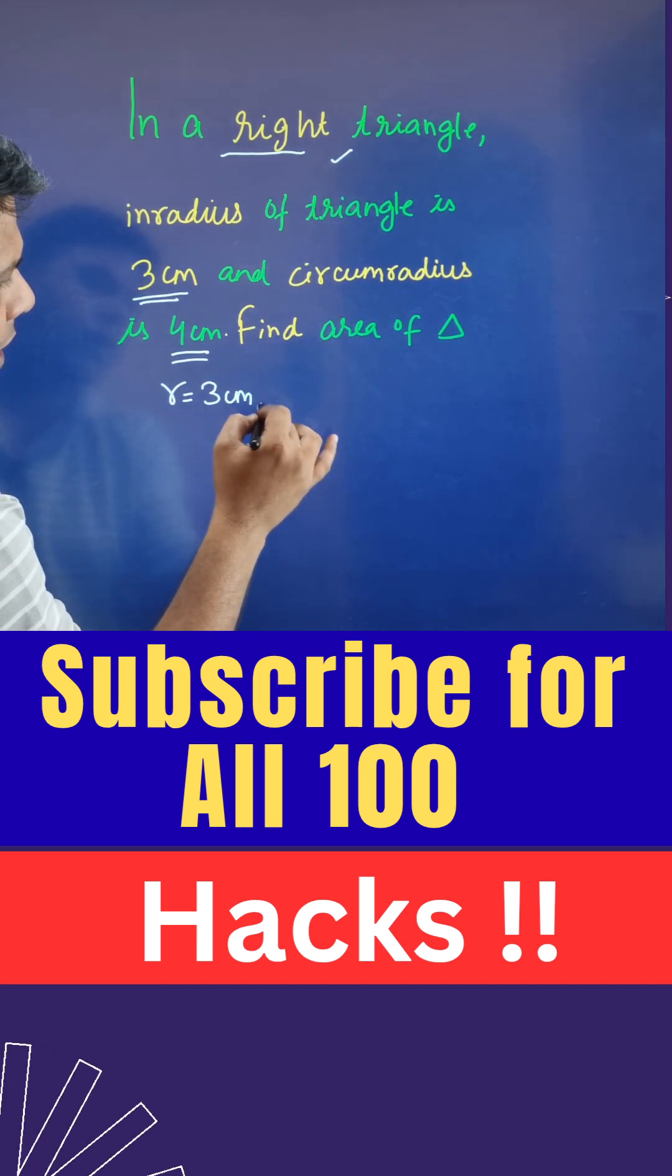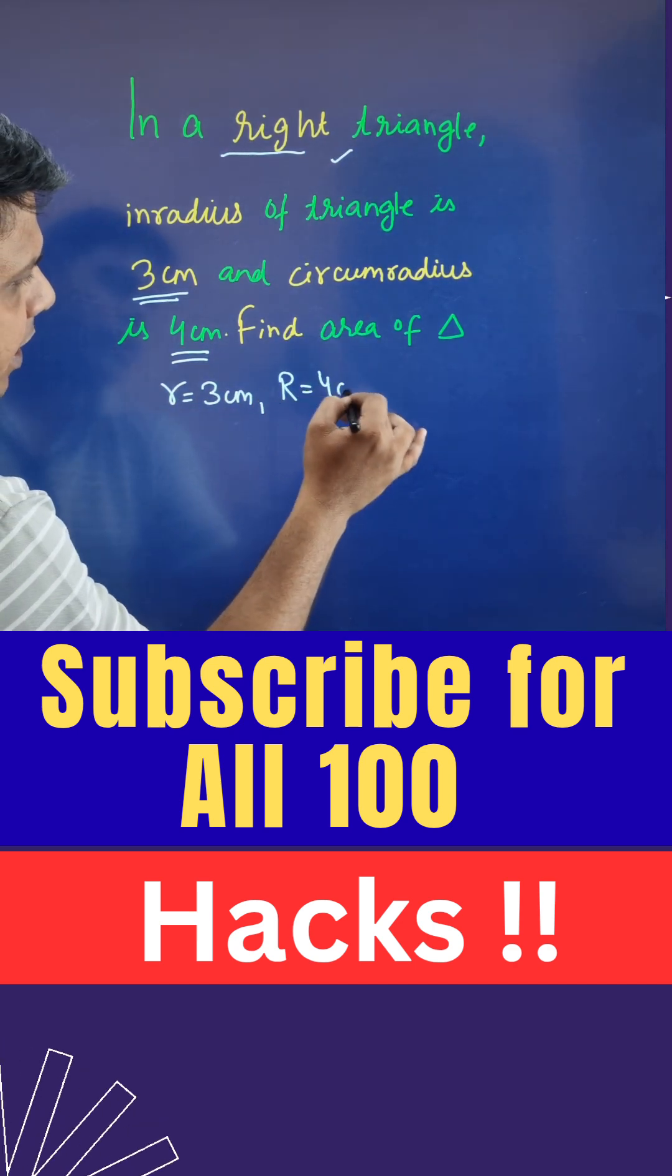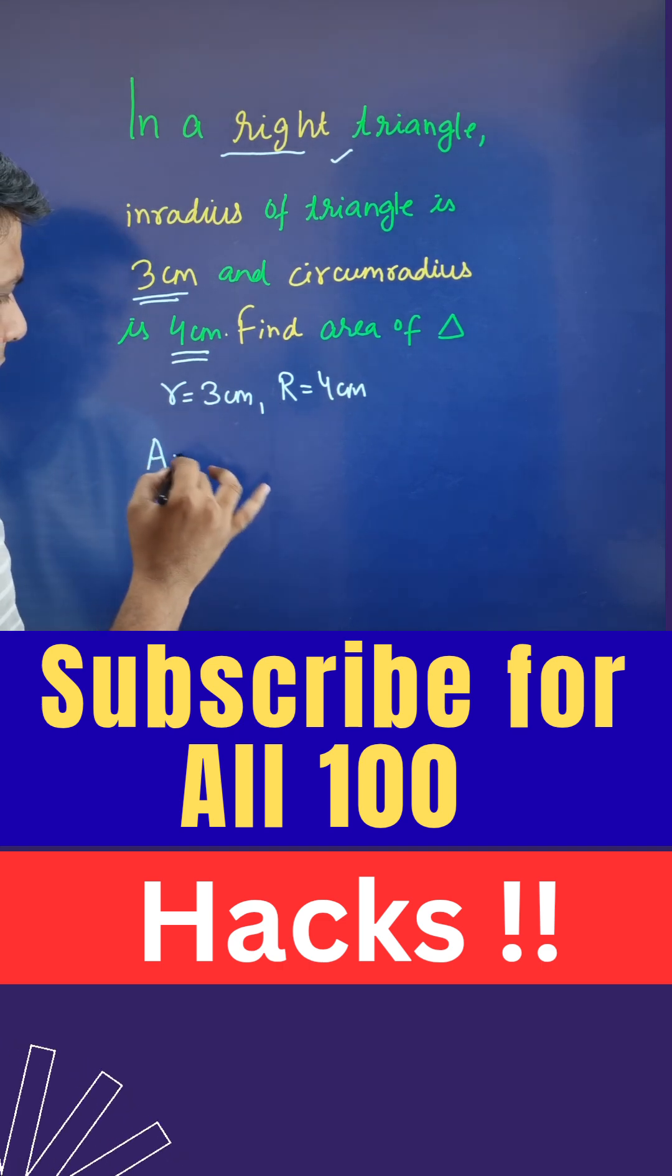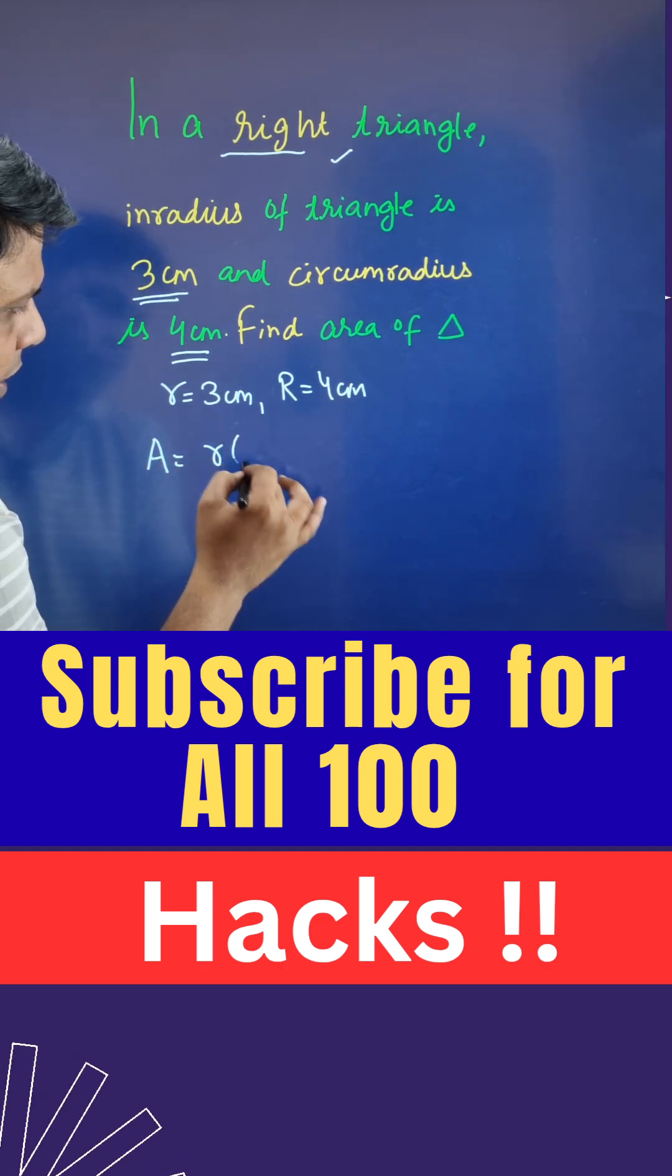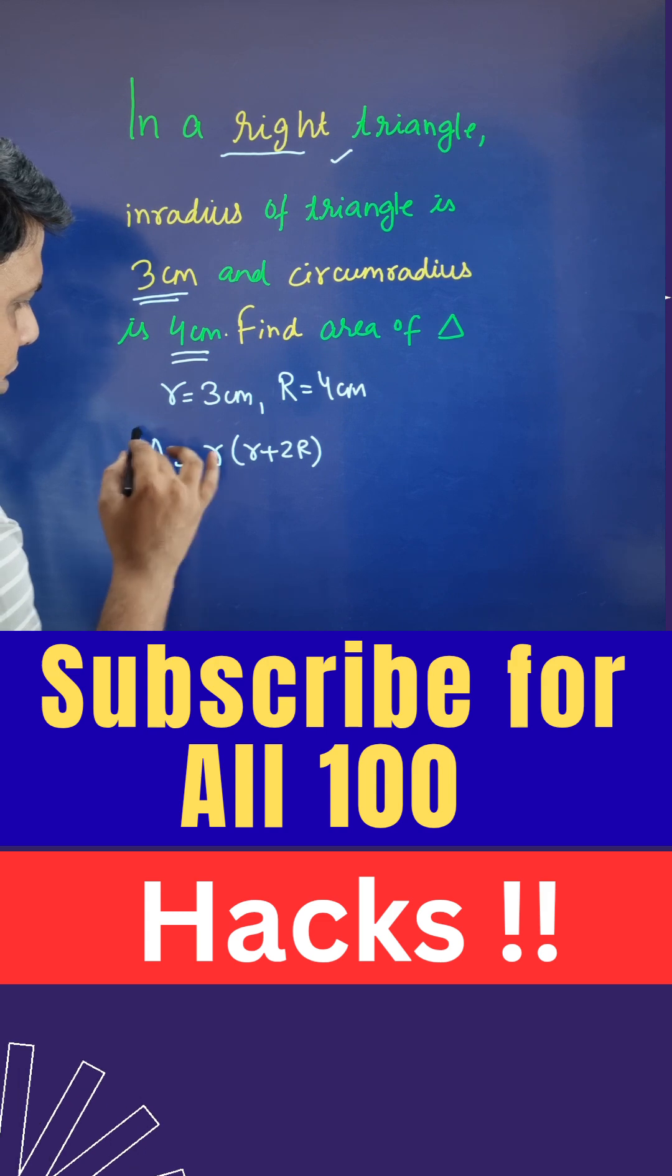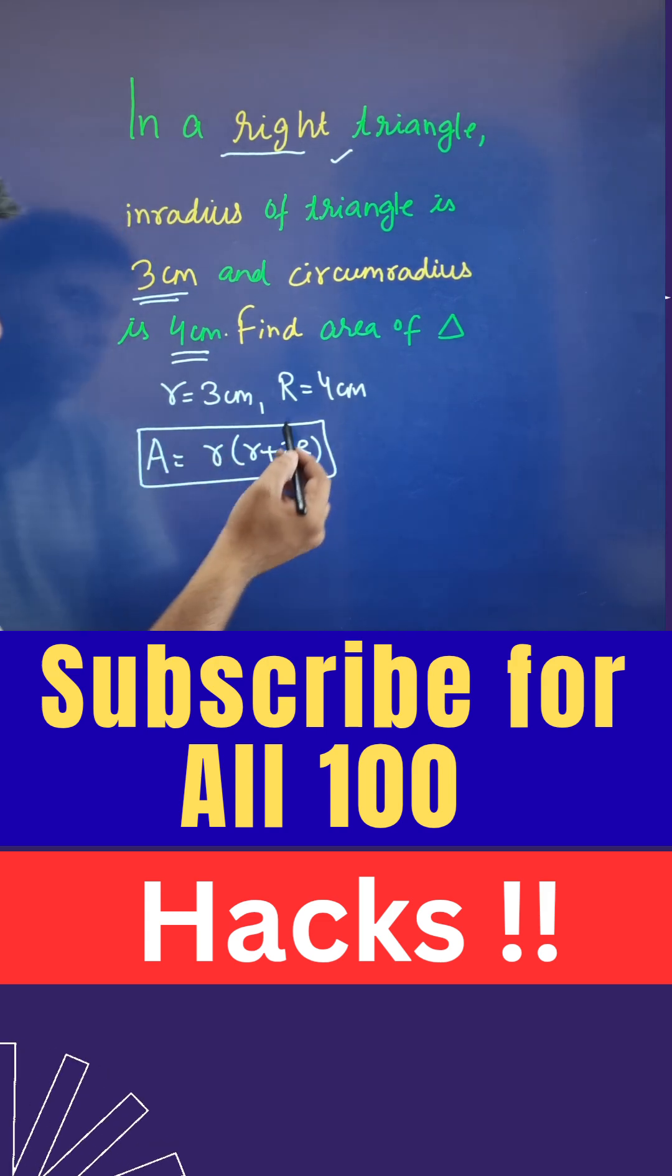We can find the area by just r into r plus twice of R. That's it. So twice of R means capital R, the circumradius. So r is given to us as 3, and this is 3 plus 2 into 4.